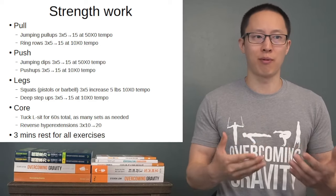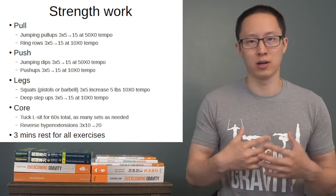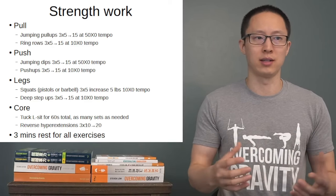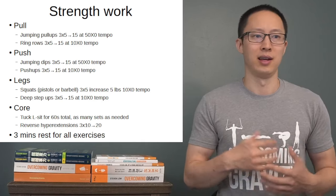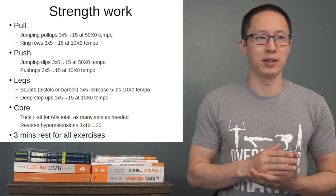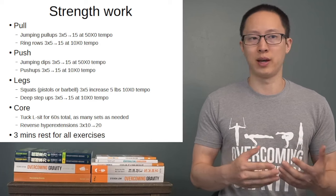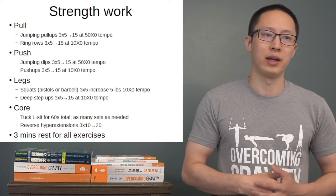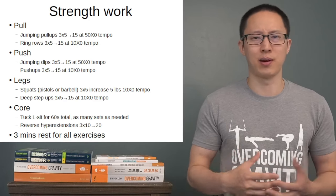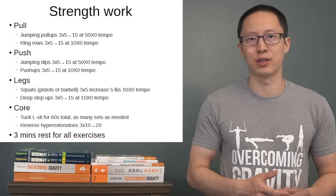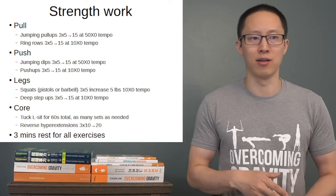For strength work, we're generally dividing things into upper body pull, upper body push, legs, and core as our four main areas. This is why most splits deviate along these lines — a pull or back-and-biceps day, a push or triceps-and-chest day, and so on. For a full body routine, within pull we have jumping pull-ups and ring rows — vertical and horizontal pull. For push, we have dips and push-ups — vertical and horizontal. For legs, a squat-type motion and a hip hinge like a step-up or deadlift. For core, at least one anterior and one posterior — in this case, L-sits and reverse hyperextensions.